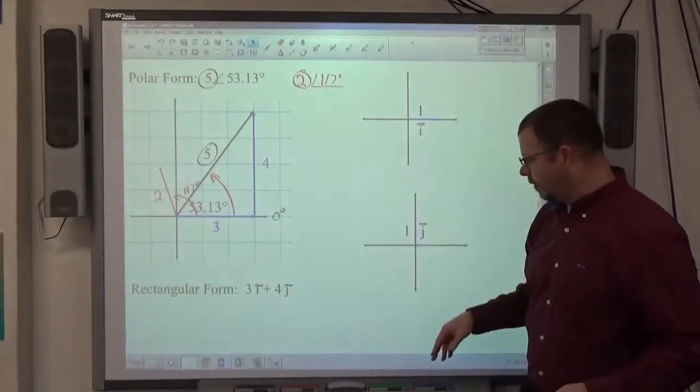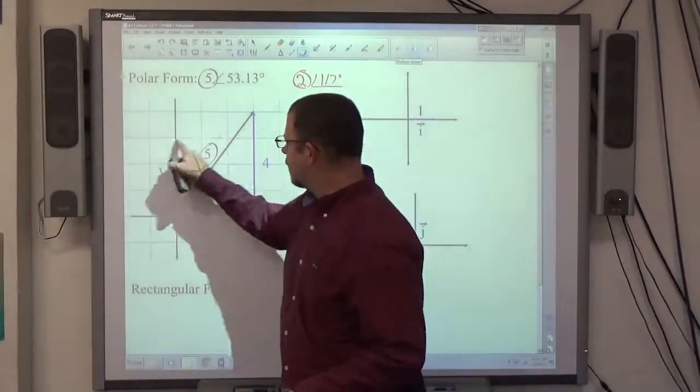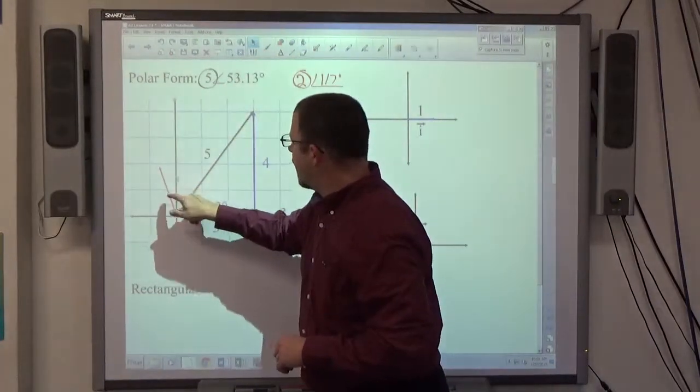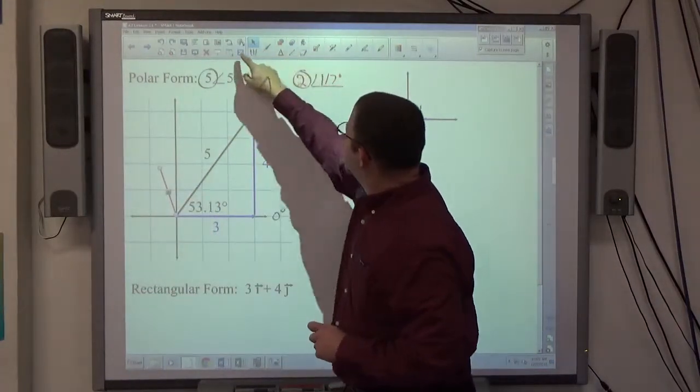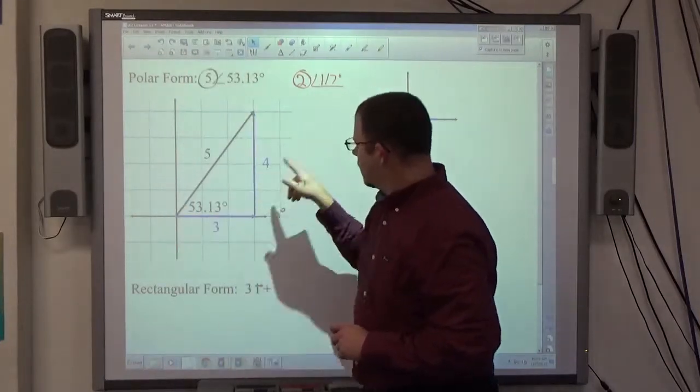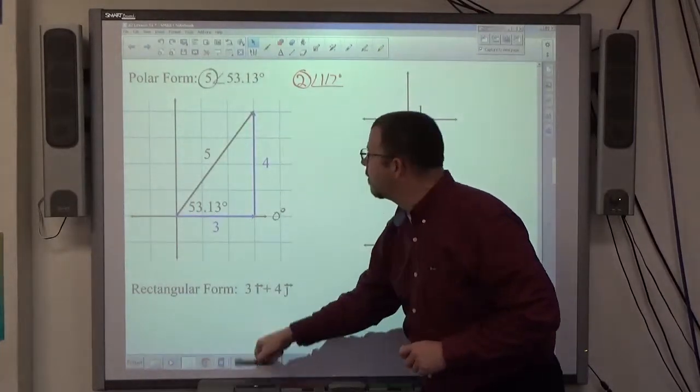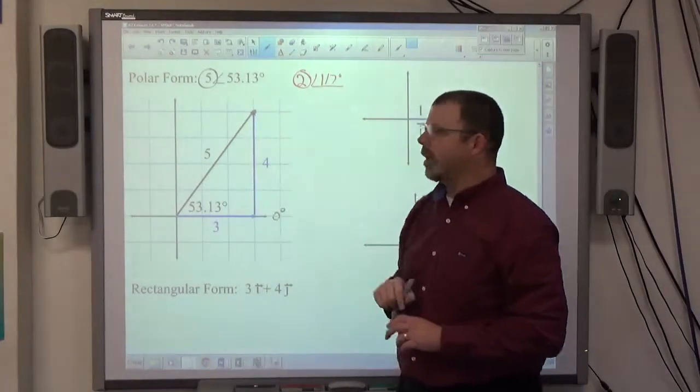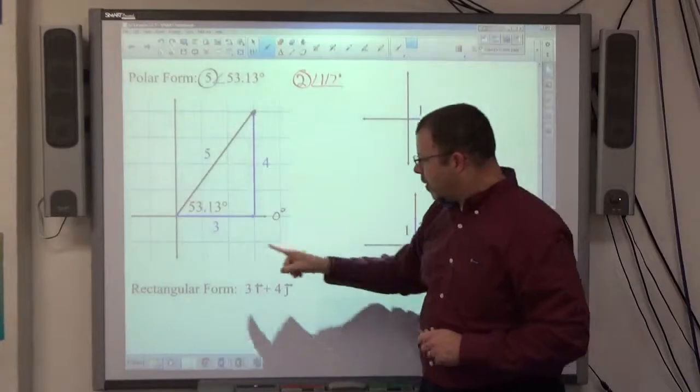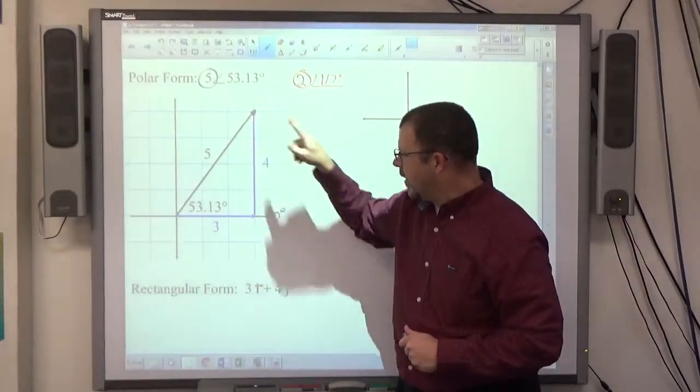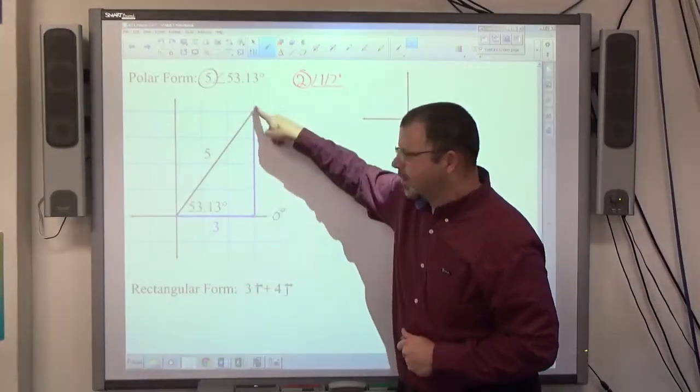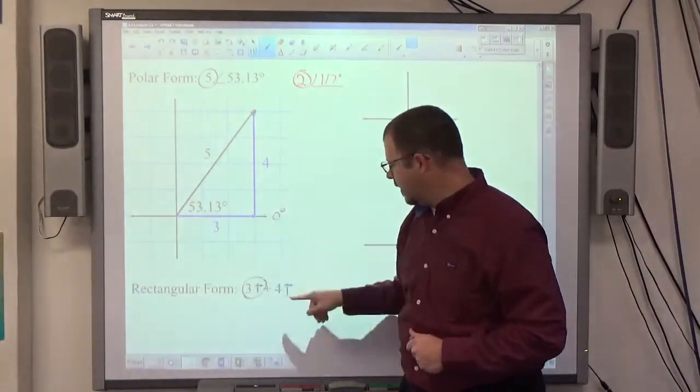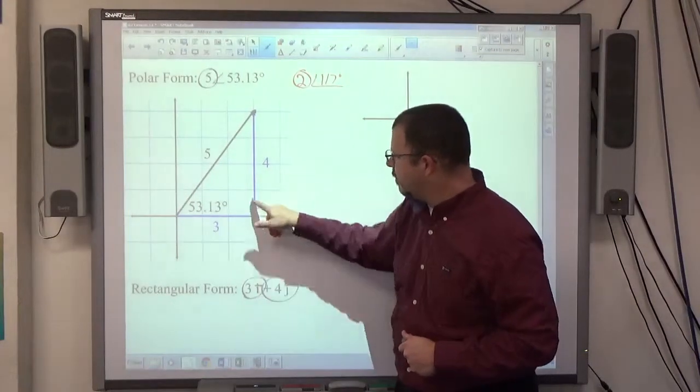So, those are polar coordinates for a vector. Now, we also have what's called rectangular coordinates, which tells you how to get to the same ending point. Polar rectangular coordinates tell me how to get to that same point horizontally and vertically. The horizontal vector is the i vector, so 3i, and the vertical vector is the j vector, 4j.